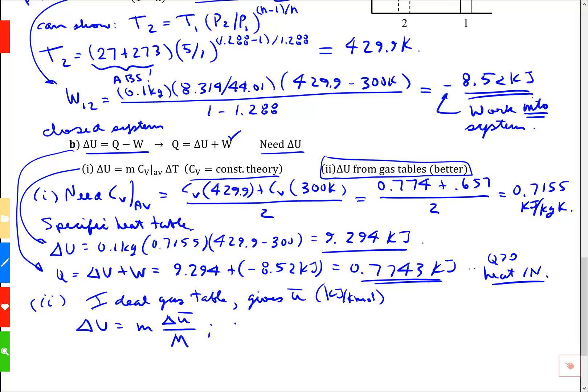We're going to first find delta u bar from the table to be the u bar value at the end point, T2 which is 430. I'm going to round it off. Minus u bar at the beginning point, 300 K. And again from the table. Which table? Let's go find one.